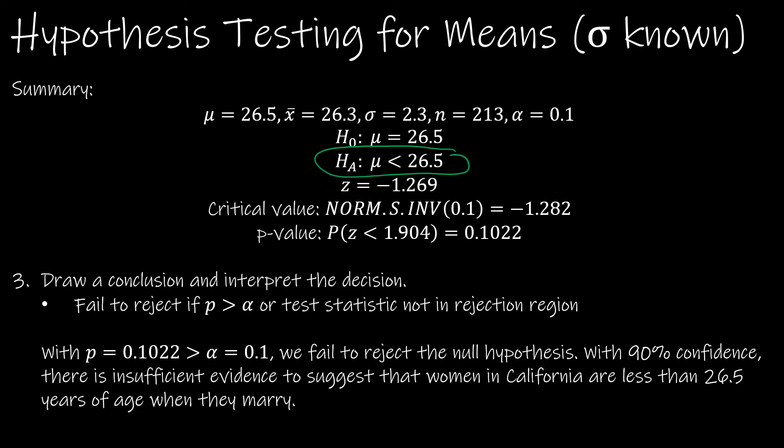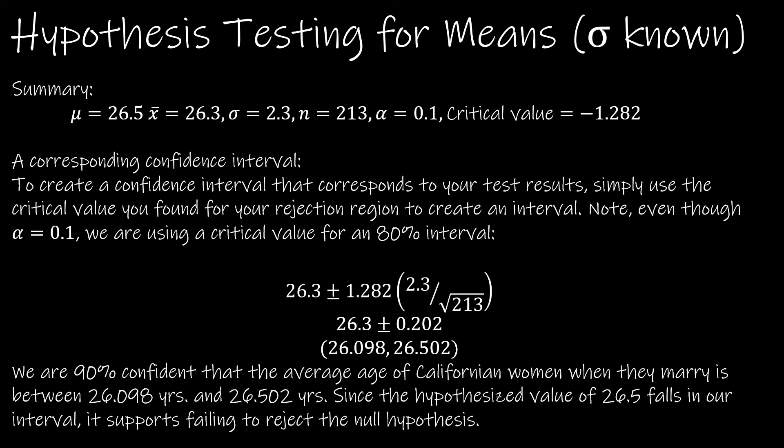Now, it's always good to do a confidence interval as well. So let's take a look at that interval. The most confusing part of this happens when we have an alpha of 0.1. And so our brain says, let's make a 90% interval, which says use 1.645 as the critical value. But remember, when we're using it to support a test, we're just going to use whatever that critical value was. And we're going to use the positive version of it.